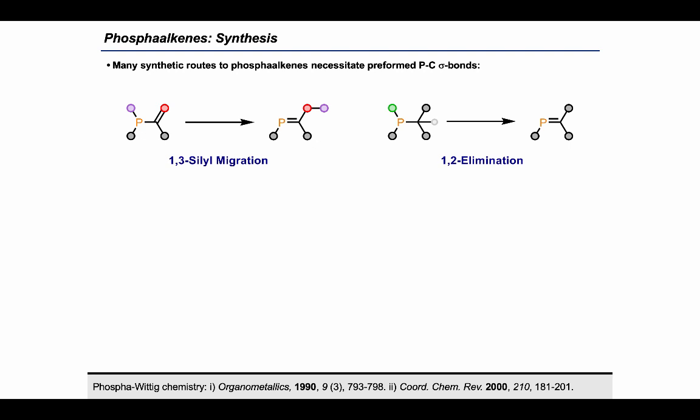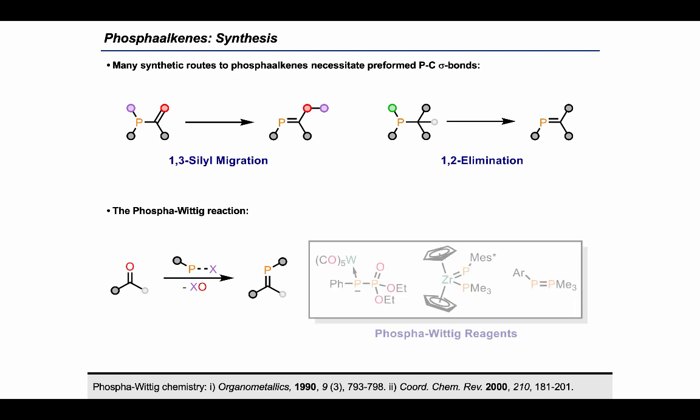These include 1,3-silyl migration or 1,2-elimination reactions in the presence of a base. A more appealing route is a late stage installation of the phosphinidine fragment and the direct synthesis of phosphoralkene from carbonyl compounds akin to the Wittig reaction has gathered significant interest. Several examples of phospha-Wittig reagents are now known but each come with their drawbacks such as limited carbonyl scope, the need for stoichiometric metal, or the poor stability of the phospha-Wittig reagent itself.